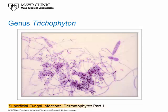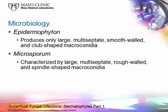The second genus is Epidermophyton. This genus contains only one organism, Epidermophyton floccosum. It produces large, multiseptate, smooth-walled, club-shaped macroconidia and no microconidia at all. That's what you see to characterize this genus.